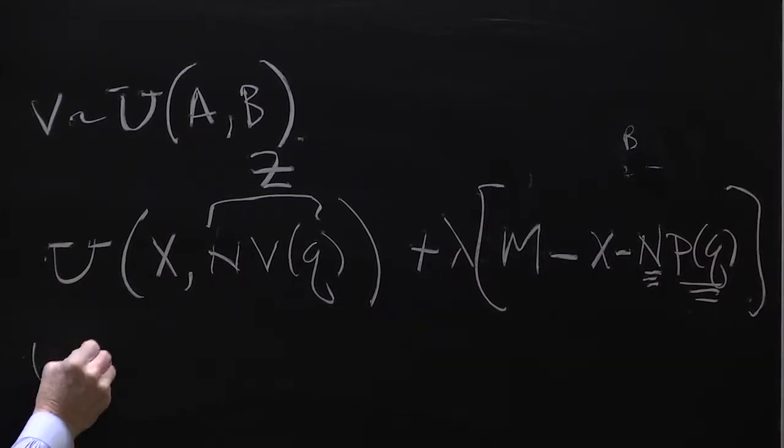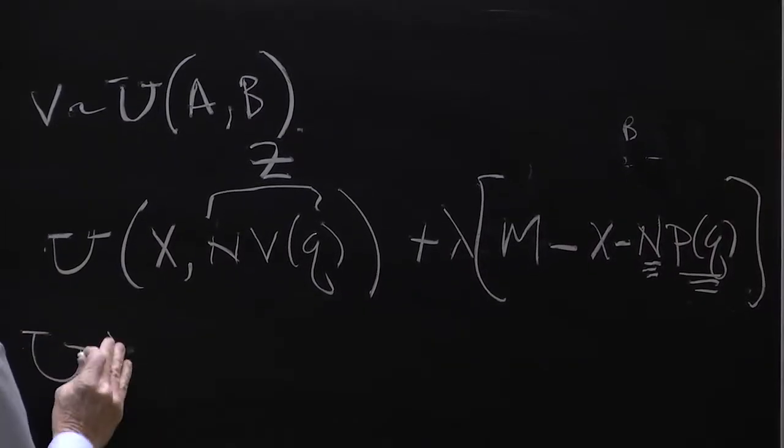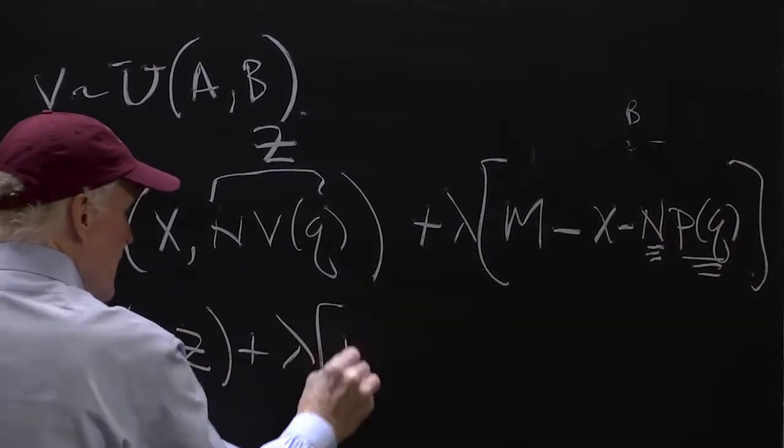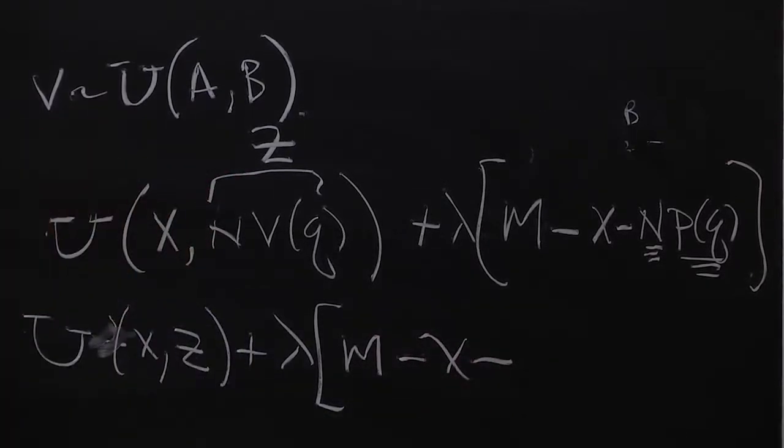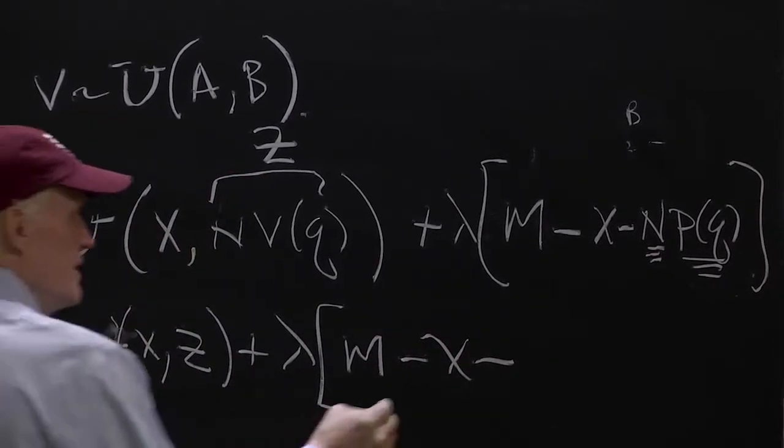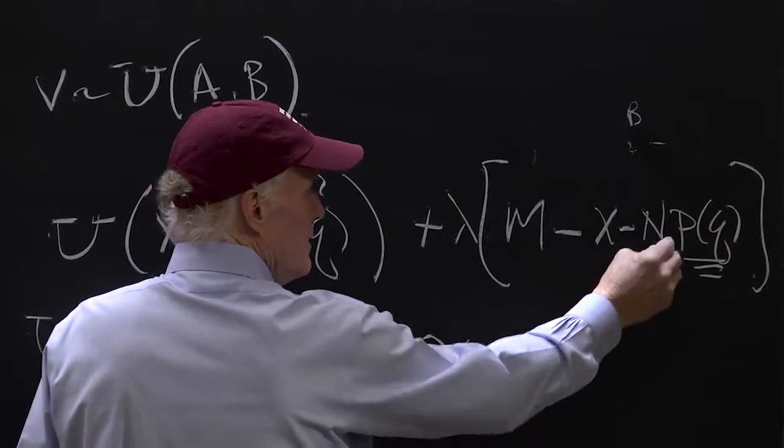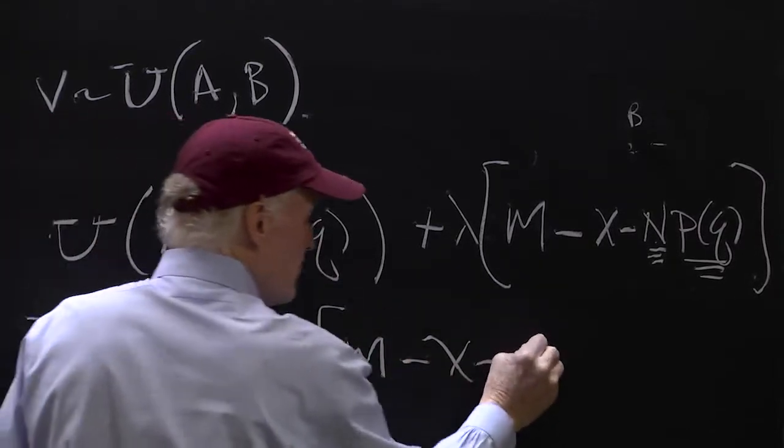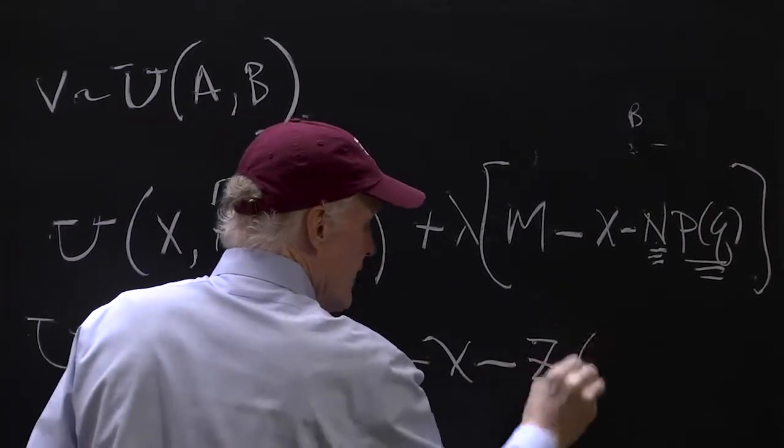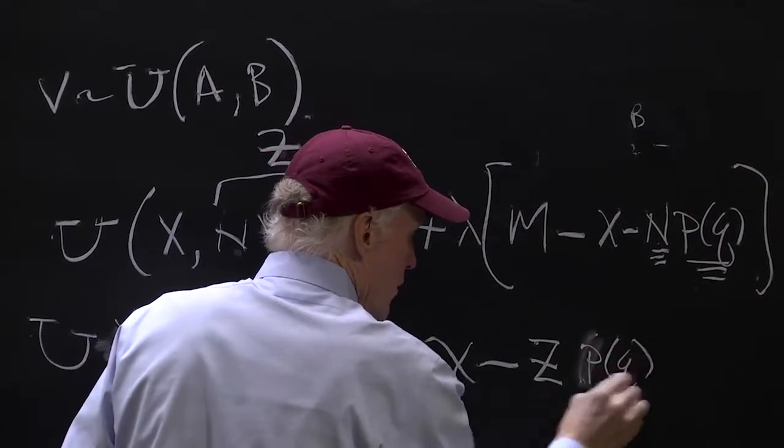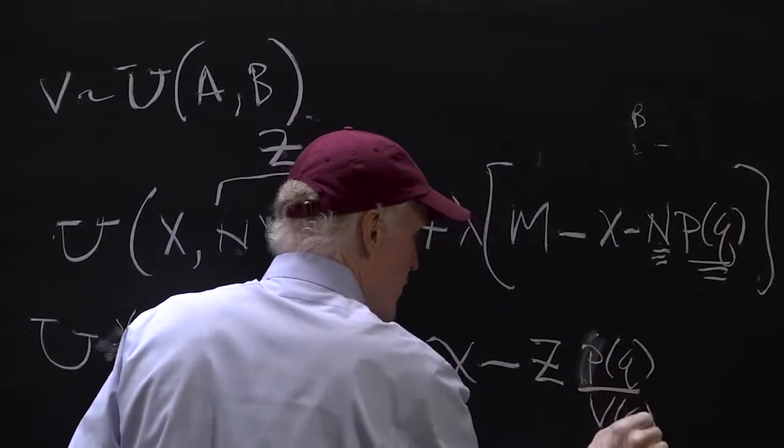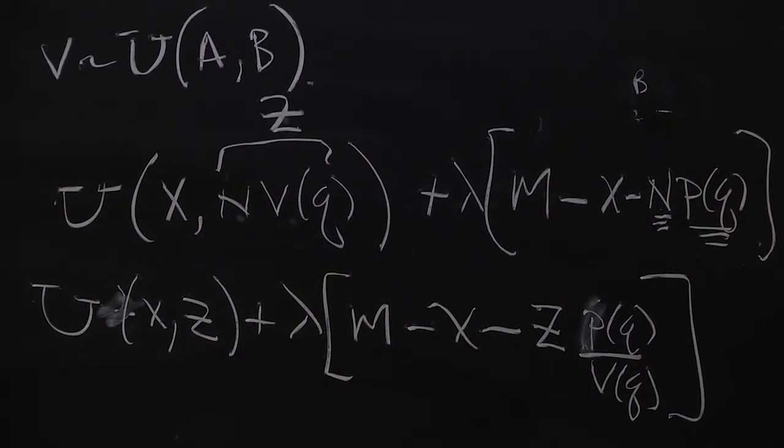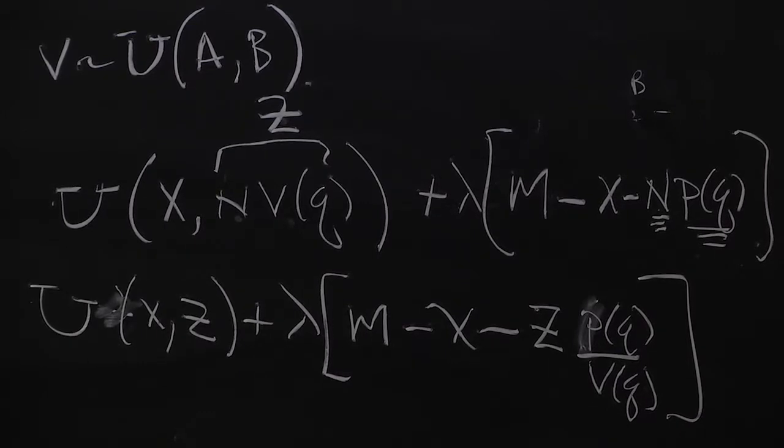So this would be u of x, z plus lambda, m minus x minus z. I'm going to need n times v is going to be z, so I'm going to put it z times p of q over v of q. Everybody agree with that? That would be my budget constraint. What would that predict about q?